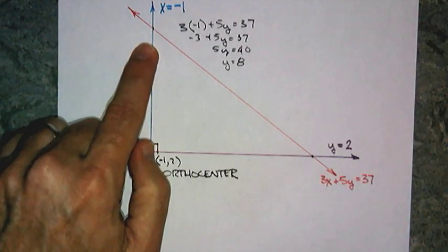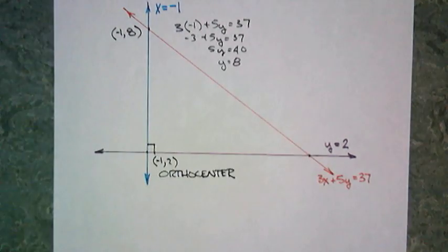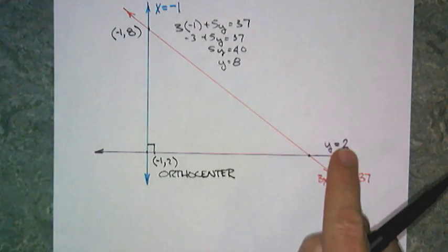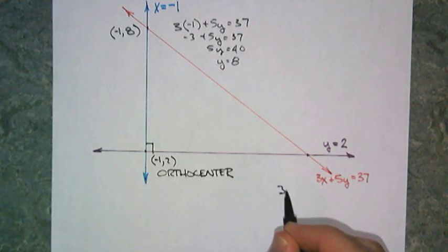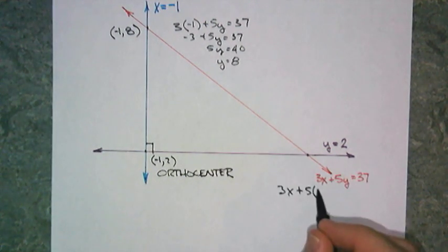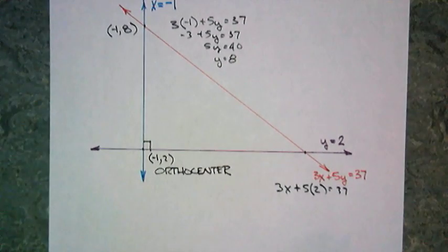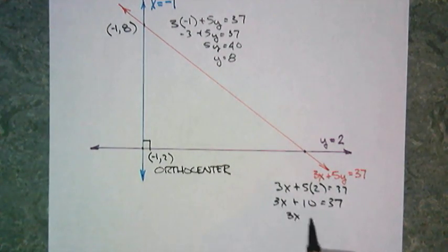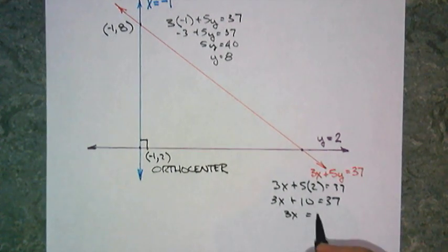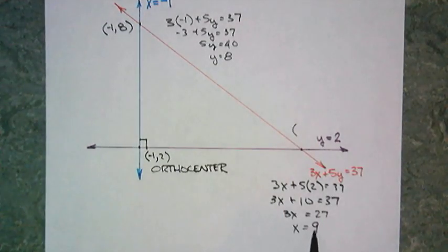y must be equal to 8. So, that point now, we know is negative 1, 8. Now, we go down to here, and we know y is equal to 2. So, I plug in 3x plus 5 times 2, I always add my parentheses, equals 37. 3x plus 10 equals 37. 3x subtract 10 off both sides equals 27. x must be 9. So, that point is now 9, 2.